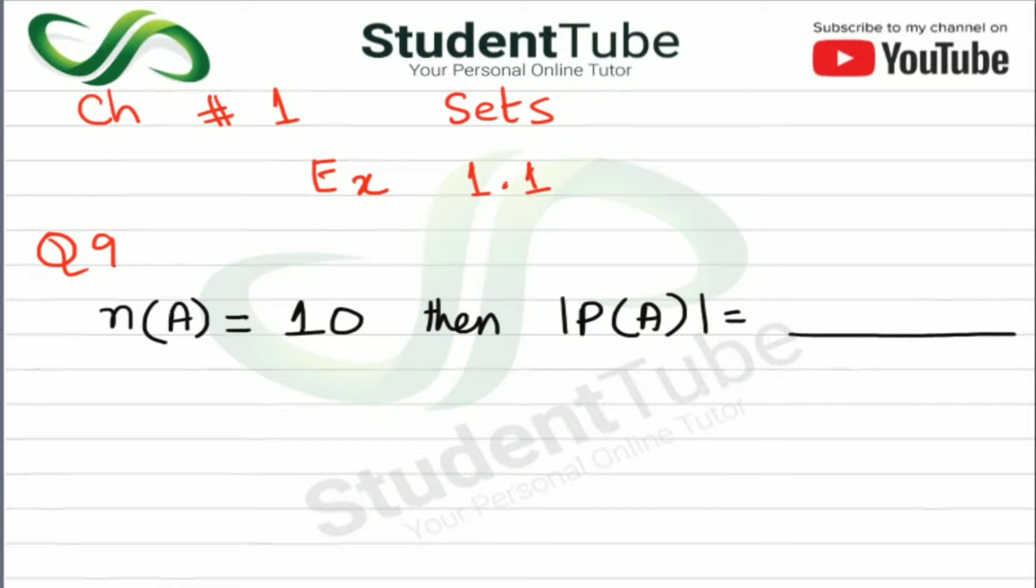So for solving it, there is a formula that we have used in our previous questions. If you want to see the previous questions, the link will be found in the description box. So here the formula is 2 to the power N. Now this is the formula which we will solve this question.